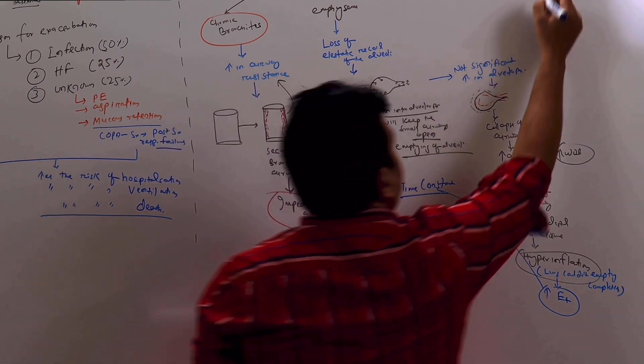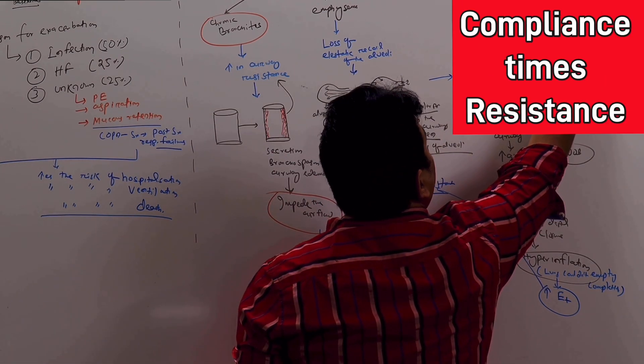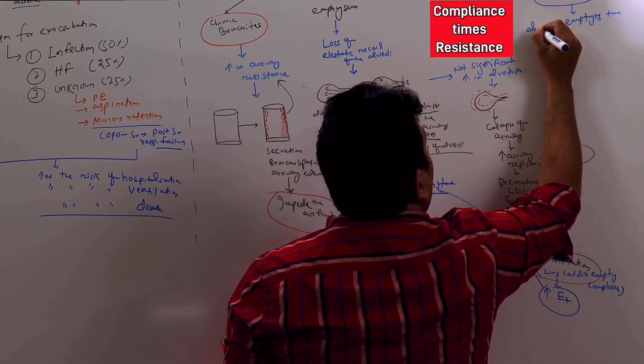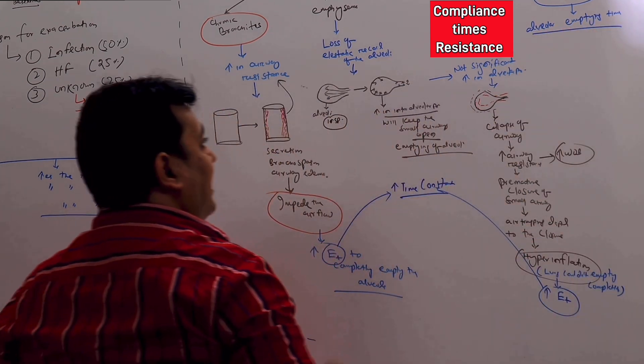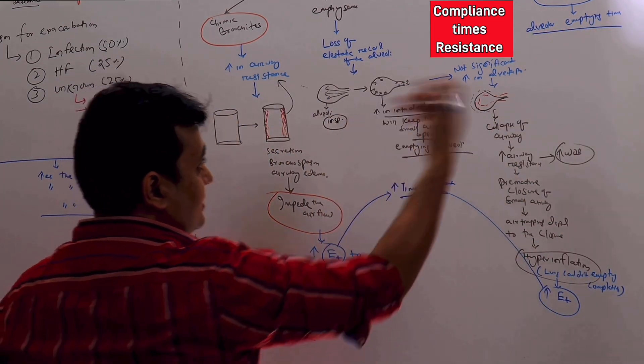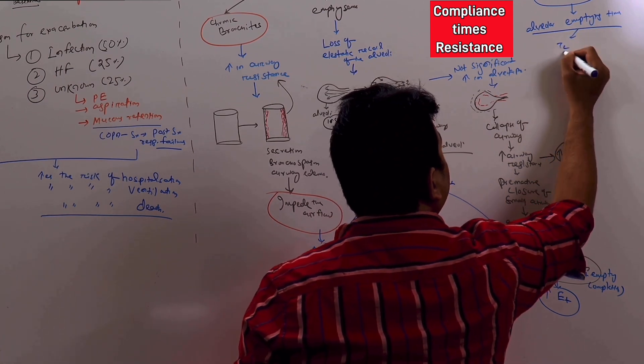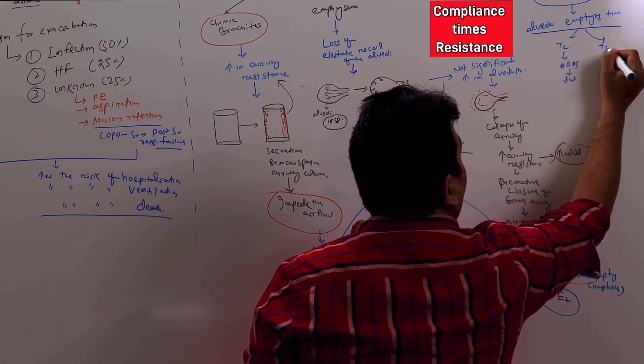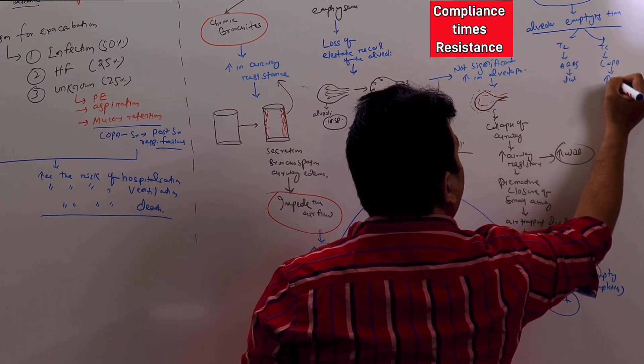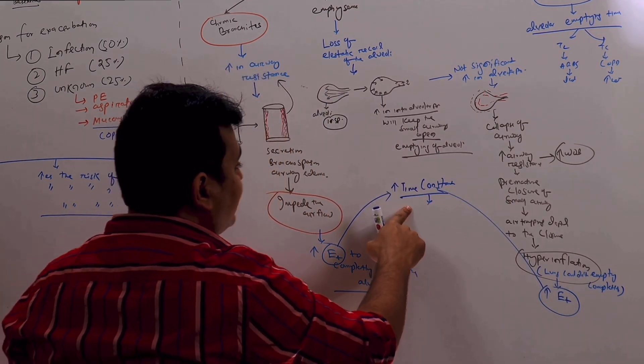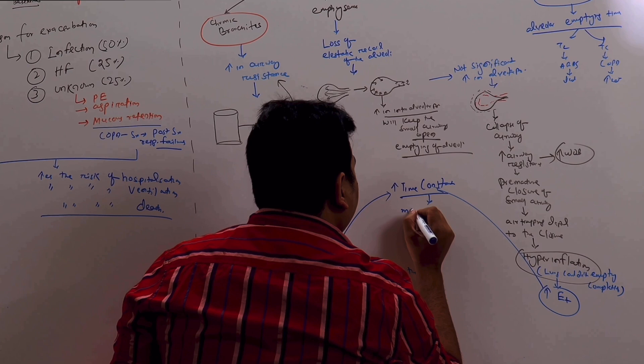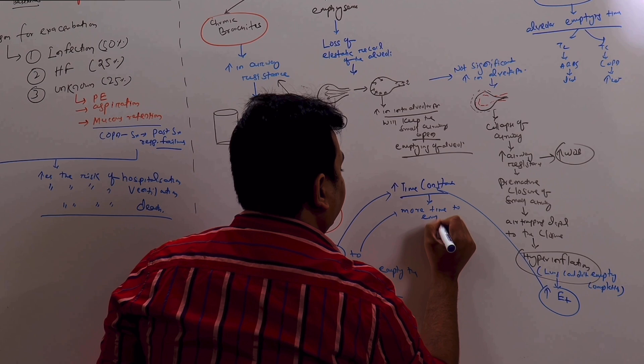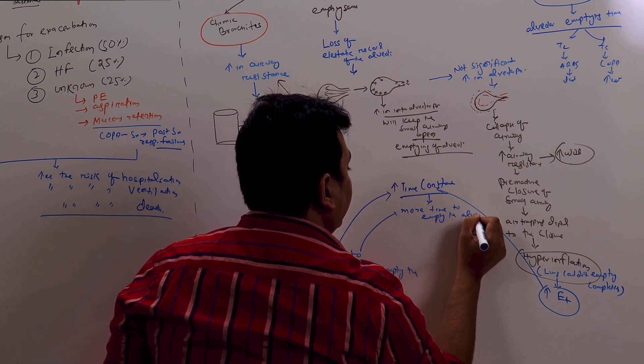This is manifested through an increase in time constant. What is time constant? Time constant is equal to compliance into resistance and this signifies the alveolar emptying time. The more the time constant, the more the time is required for the alveoli to completely empty. So if you consider the time constant in RDS, it is decreased. Time constant in COPD, it is increased. So that means, because the time constant increased, it requires more time that we have discussed here, more time to empty the alveoli.